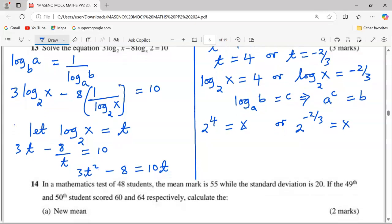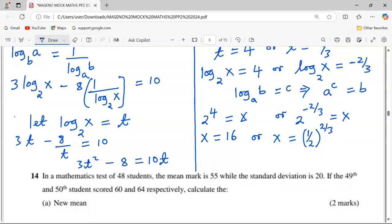At this point, now we will say the first value of x can be 16, or the second value of x can be... we apply the negative law of indices, whereby when we have a negative exponent, we can take the reciprocal and the power becomes positive.